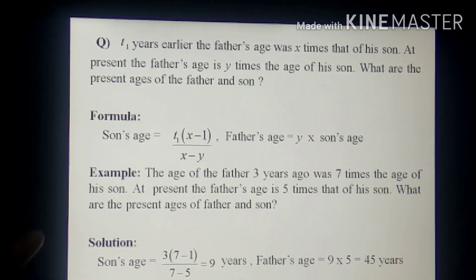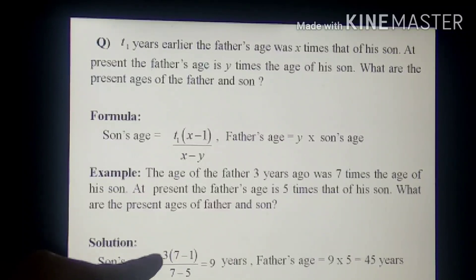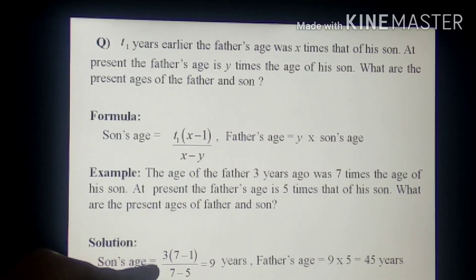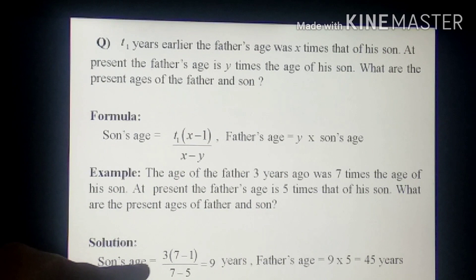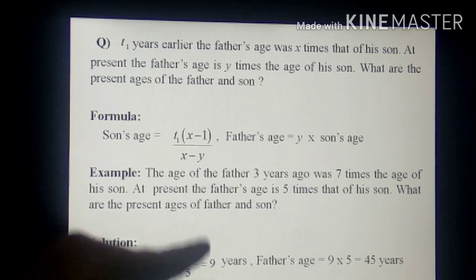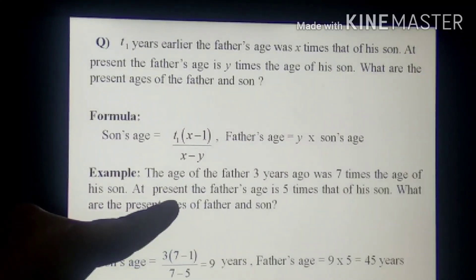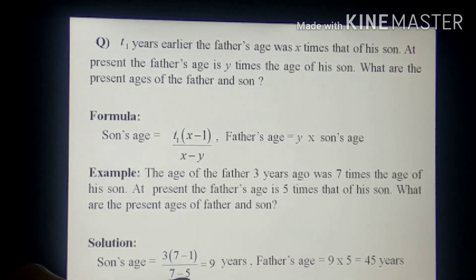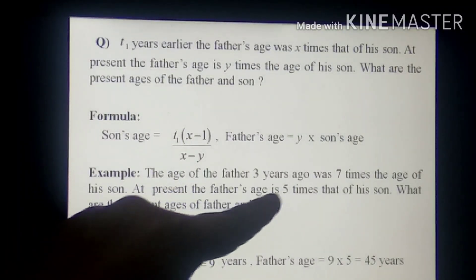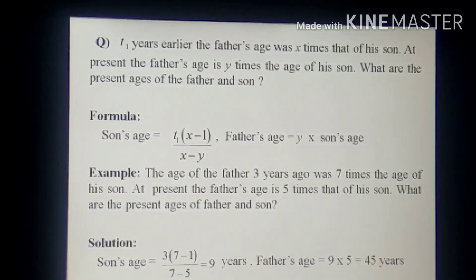So using the formula, son's age equals, here T1 equals 3 because the age of the father 3 years ago. 7 minus 1, here X is 7 because it was 7 times the age of his son, divided by 7 minus 5. Here Y equals 5 because the present age of father is 5 times, which after calculation comes out to be 9 years.